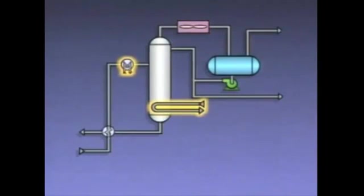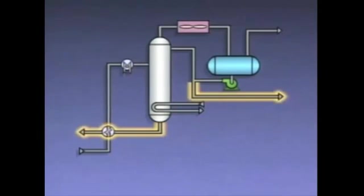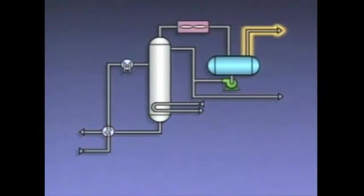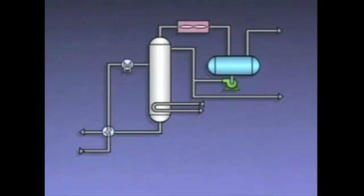Most of the heat input to the tower from the reboiler and the feed preheater is removed by the condenser. Heat also leaves the tower in the products, in the gases that are vented from the system, and by heat transfer through equipment casings and piping. Secondary energy flows are associated with heat transfer in which the heat remains within the distillation system.